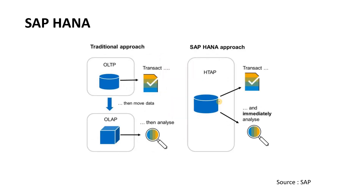Another idea behind SAP HANA is that because the database is so powerful and fast, you no longer need two separate databases — one for reporting (OLAP) and one for transactions (OLTP). This is not fully achieved yet, as BW is still around and will likely remain for some time, but the ideal state is a single database where you can do both transactions and analysis. SAP is moving in that direction.